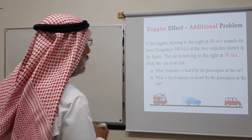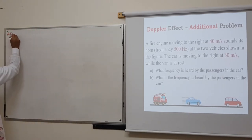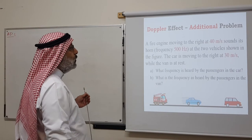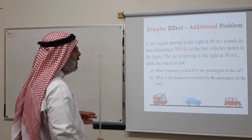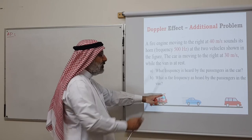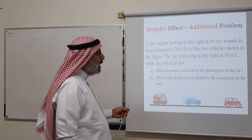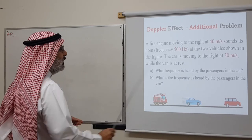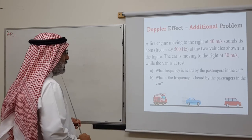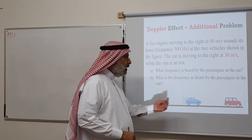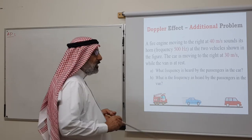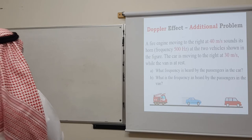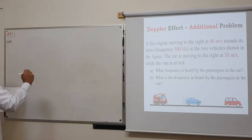Here is a problem not in the textbook. A fire engine moving to the right at 40 m/s sounds its horn at 500 Hz toward two vehicles: a car moving to the right at 30 m/s, and a van at rest. What frequency is heard by passengers in the car, and what frequency is heard by passengers in the van?